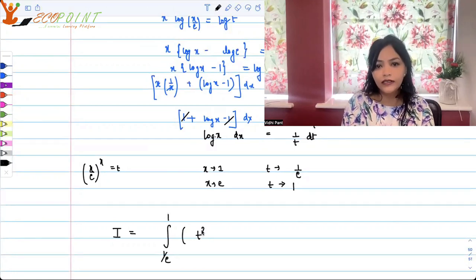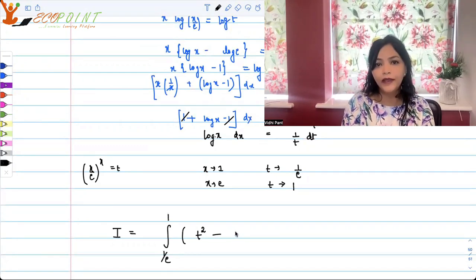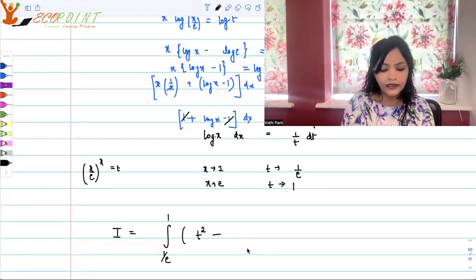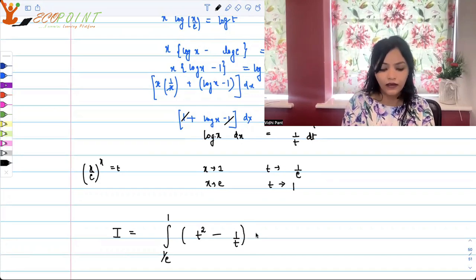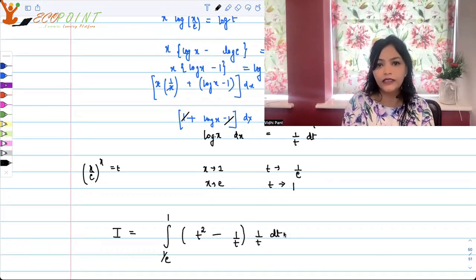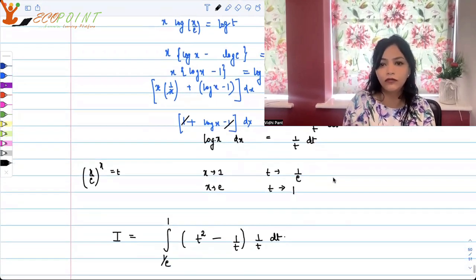And t square, because that's what we had taken. We had taken x by e to the power x. So since there was 2x, so it is t square minus x by e to the power x is t. So therefore, e by x, that is 1 by t minus 1 by t multiplied by 1 by t dt, because your dx is 1 by t dt.